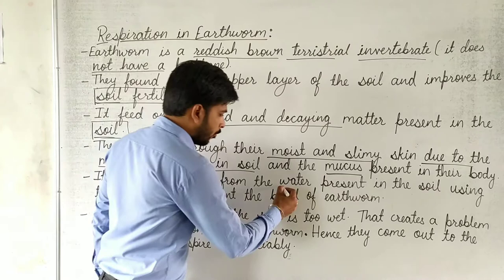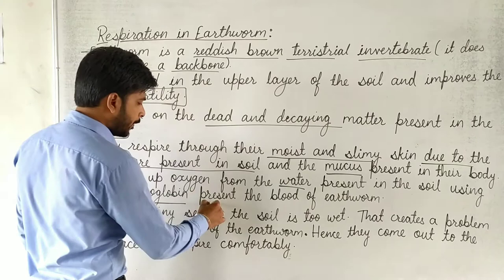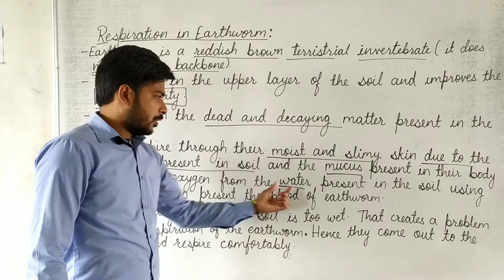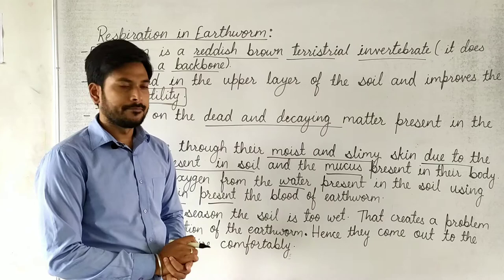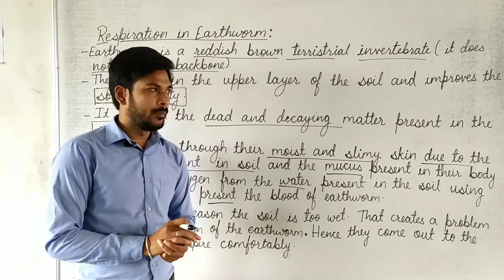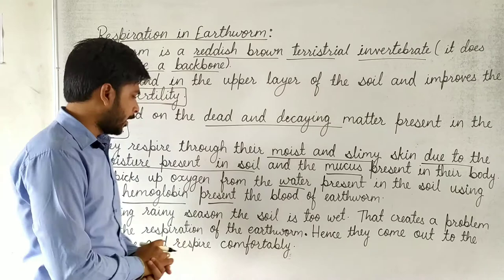The earthworm picks up oxygen from the water present in the soil using the hemoglobin present in its blood. Since it lives in the soil, the dissolved oxygen in the water is taken up through the skin using hemoglobin, and then supplied to the body.